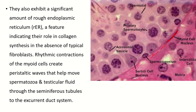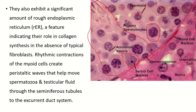Here you can see the other cells of the seminiferous tubule — all of these are spermatogenic cells. This is the primary spermatocyte; it is the biggest spermatogenic cell. However, the biggest cell of the seminiferous tubule overall is the Sertoli cell. The primary spermatocyte is the biggest cell among the spermatogenic cells.